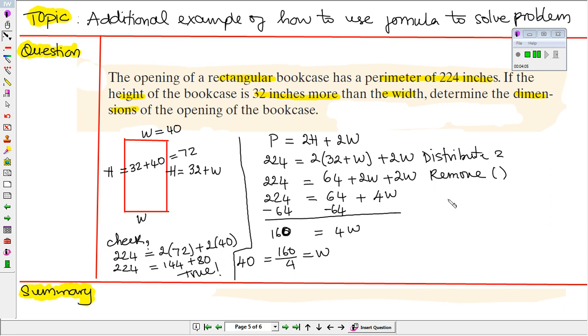Then we subtracted 64 from both sides. Then we are going to divide both sides by 4.